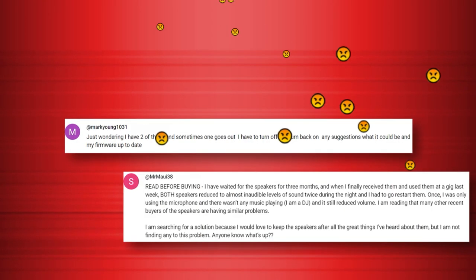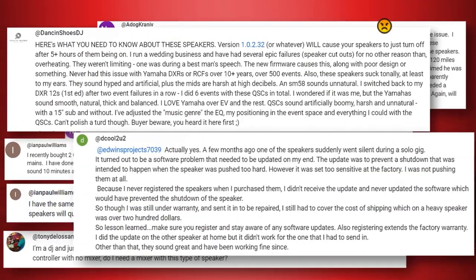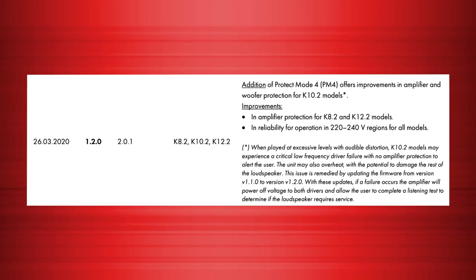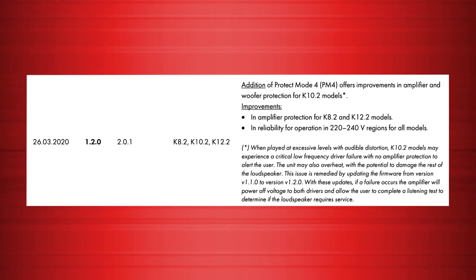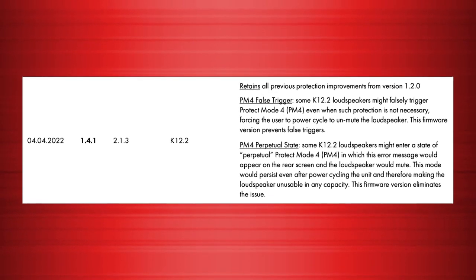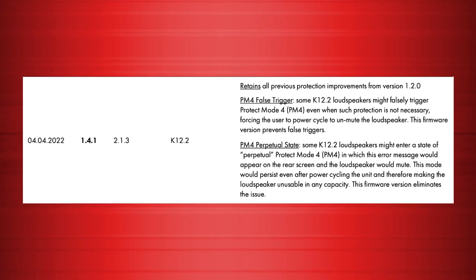We wanted to address the most commented-on item on our original QSC K12.2 video: why is my speaker cutting out? After digging around on audio forums and QSC technical sheets, this is a well-known issue among repair techs that work on QSC products. QSC K12.2 speakers were plagued with a manufacturing defect that occurred in some speakers made during 2020 and 2021, which caused the speaker amp module to fail. QSC responded by introducing firmware 1.2.0, which included a new Protect Mode 4 (PM4) designed to protect QSC products from critical thermal failure. This ended up leading to other issues, such as false triggers of the Protect Mode or, in some cases, the speaker refusing to leave Protect Mode — essentially breaking it.